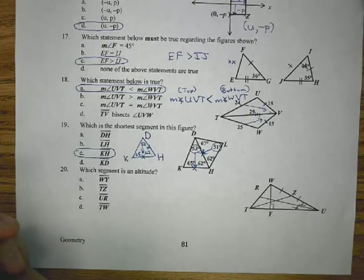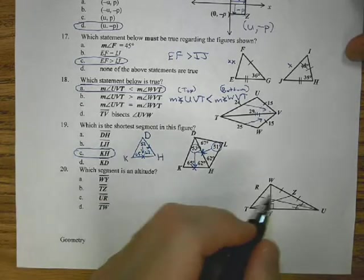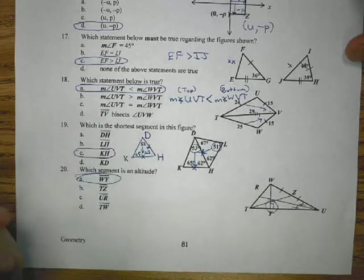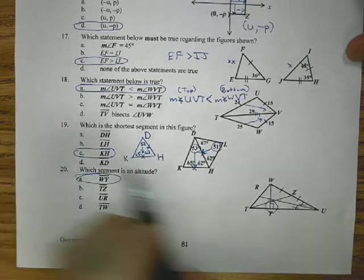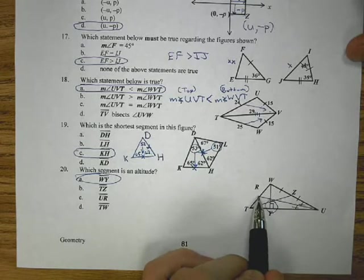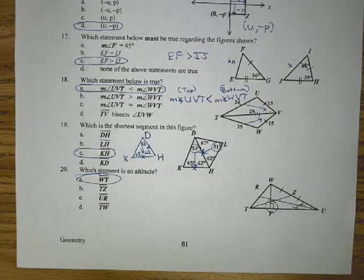Last one for 20, I need an altitude, and like we talked about earlier, the altitude is the perpendicular line through the vertex. Only one of them has a perpendicular, so it is WY is the altitude. TZ would be a median, UR would be an angle bisector. We don't have a perpendicular bisector, but that one is an altitude. Thank you.